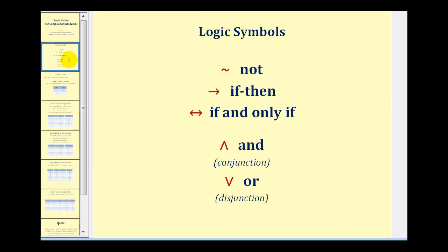Here are the most common symbols used for logic and truth tables: the negation symbol, which means 'not'; the 'if-then' symbol; 'if and only if'; the conjunction or 'and' symbol; and the 'or' or disjunction symbol.